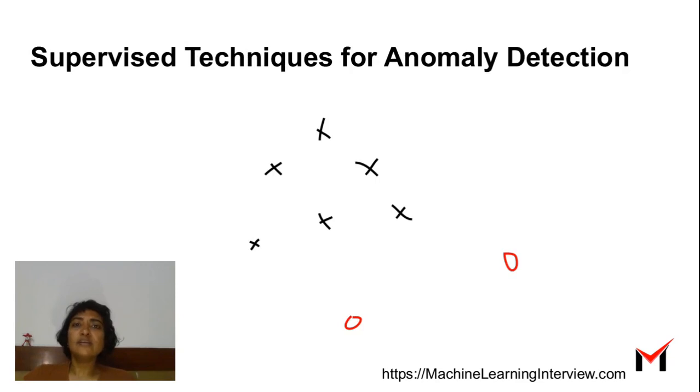There are two kinds of high-level approaches: supervised techniques for anomaly detection and unsupervised techniques. Supervised techniques involve those techniques where we have some examples of anomalous data points. For instance, the two anomalous data points here are marked in red, and hence we can train a classifier model to learn which point is anomalous and which point is not.